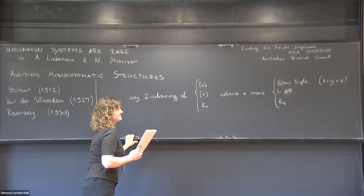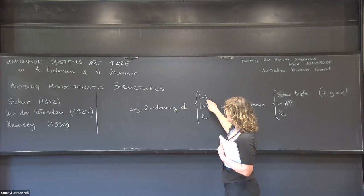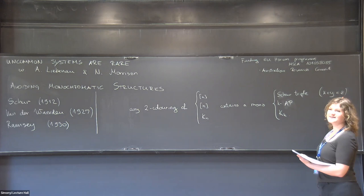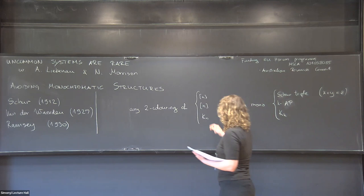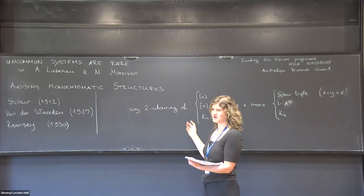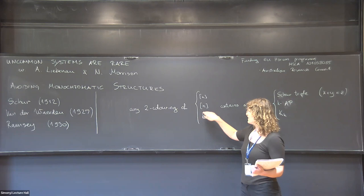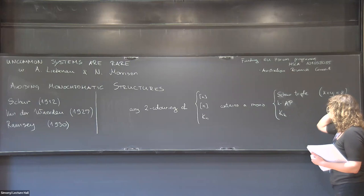Our starting point is classical statements in Ramsey theory. For instance, for Schur triples: your universe is the integers from 1 up to n, and the question is whether there exists a 2-coloring with no monochromatic Schur triples — no x, y, z all red or all blue. The answer is no, even for n equals 9. Van der Waerden's theorem says you cannot avoid a monochromatic k-term arithmetic progression — I'll use 'kAP' for k-term arithmetic progression.